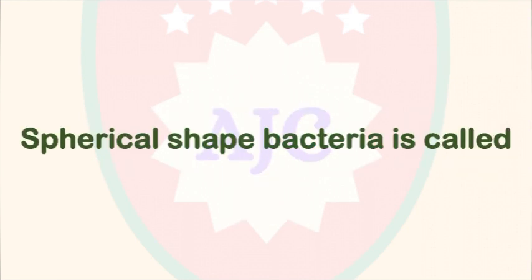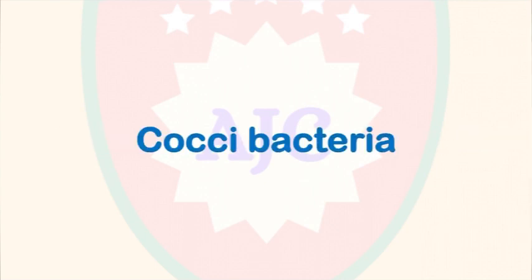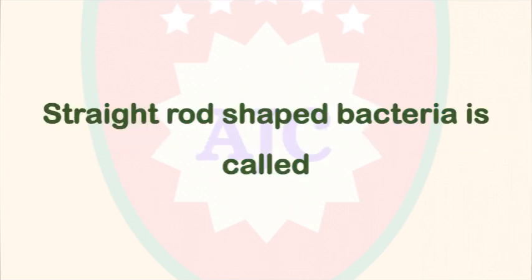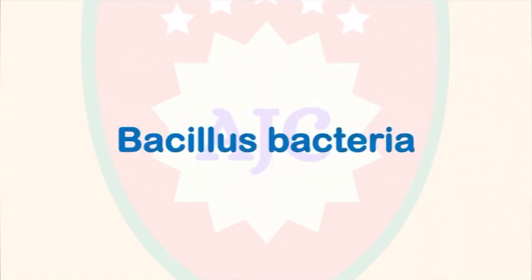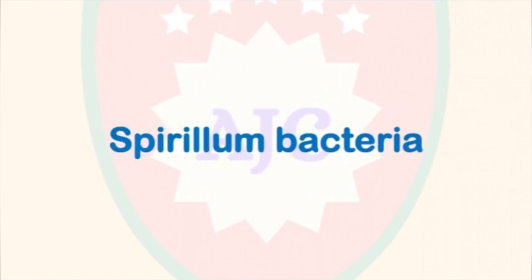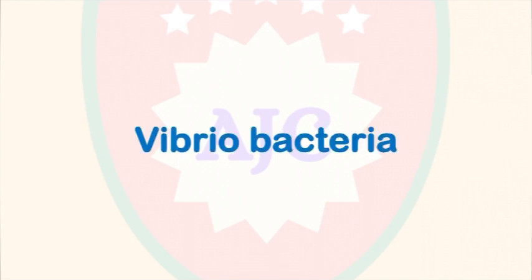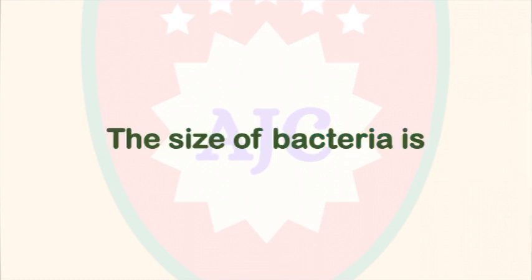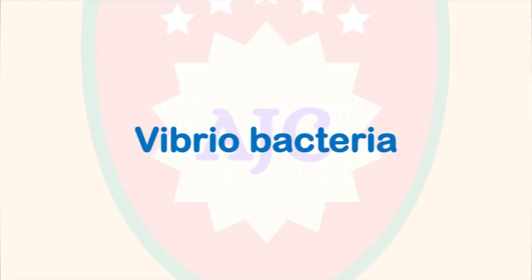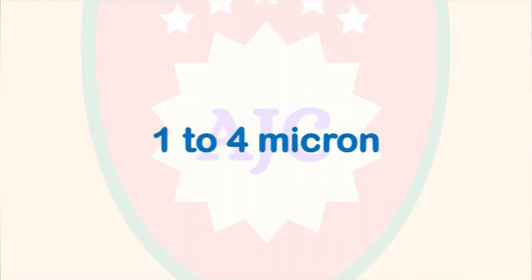Bacteria have different shapes: spherical-shaped bacteria are called cocci, straight rod-shaped bacteria are called bacillus, spiral-shaped bacteria are called spirilla, and curved-shaped bacteria are called vibrio. Bacteria size is typically 1 to 4 microns.